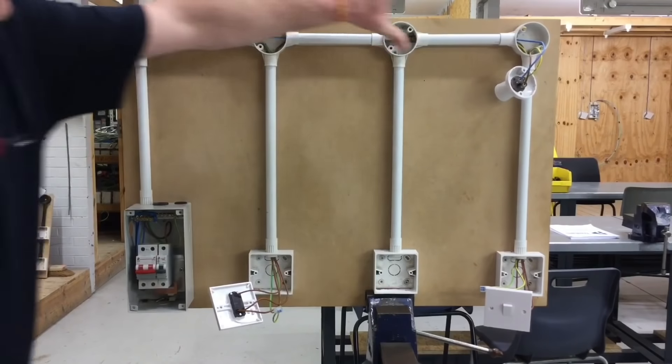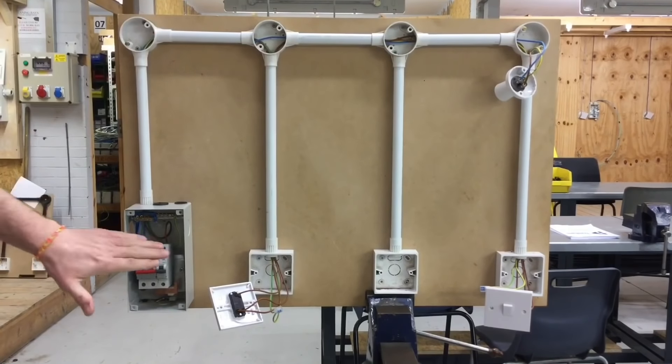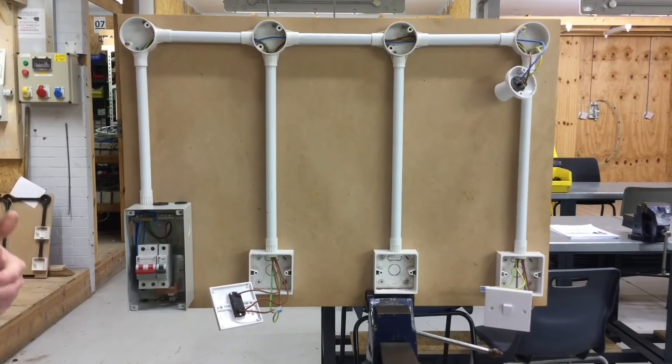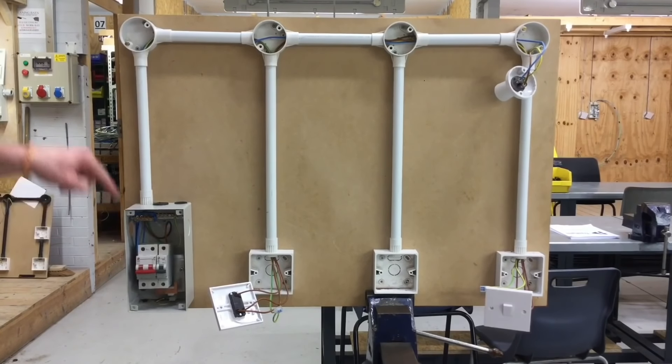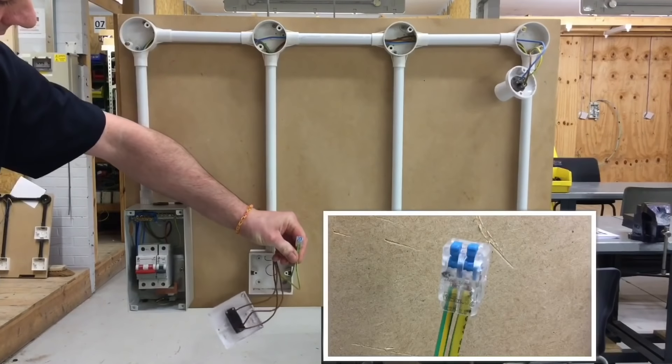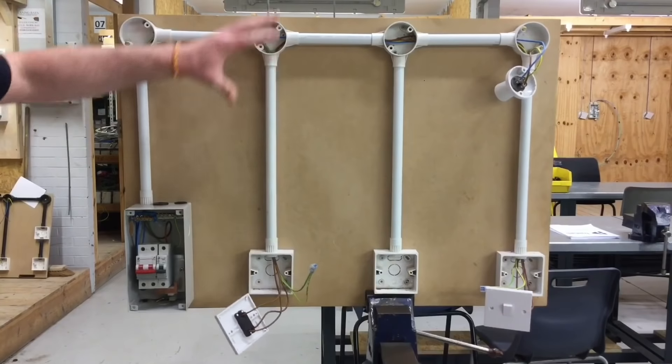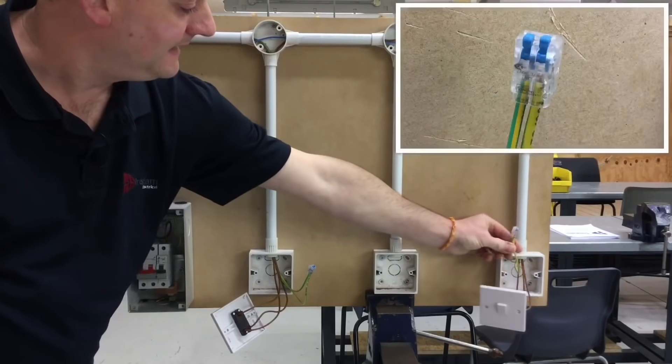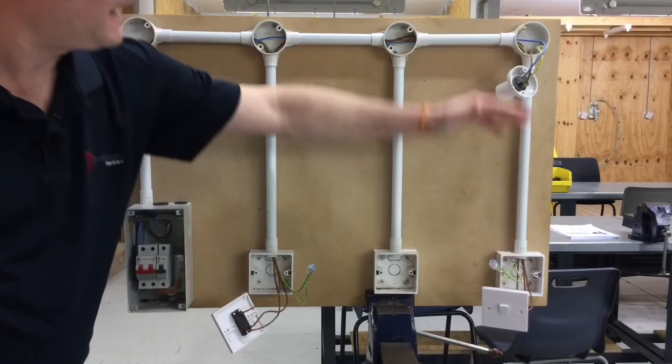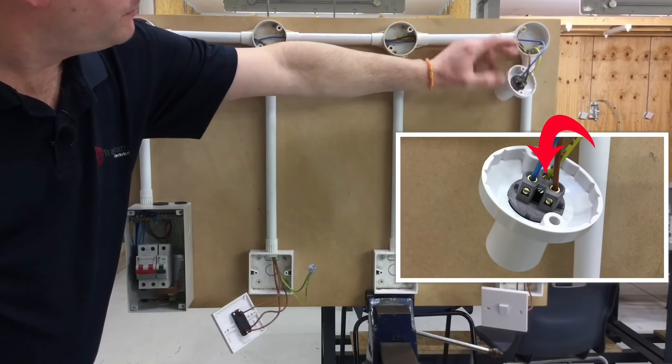The route of the CPC starts in the consumer unit in the earth terminal. We try to limit the number of CPCs in the straight skirted back lamp holder, so our CPC went from our consumer unit down to the first switch where we've connected it in a maintenance-free connector, then from this switch down to the second switch, again connected in a maintenance-free connector, and then back to the straight skirted back lamp holder. We were trying to reduce the number of conductors at the lamp holders to make it easier to terminate.